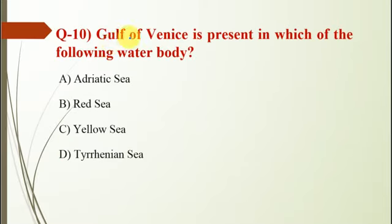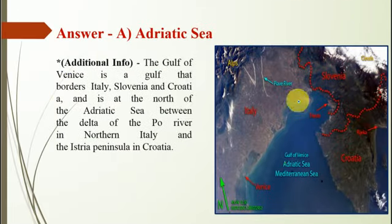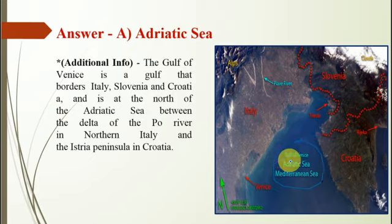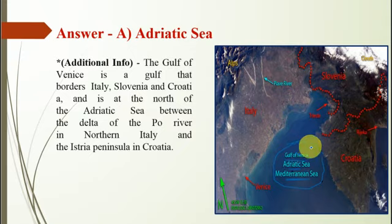Question number 10: The Gulf of Venice is present in which water body? The correct option is A — the Adriatic Sea. As shown on the map, the Gulf of Venice is in the Adriatic Sea, which is part of the Mediterranean Sea. It is a gulf that borders Italy, Slovenia and Croatia.